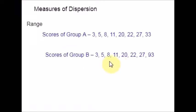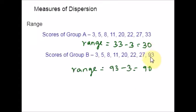I would like to show you one more example. Scores of group A and scores of group B are given. Let's find the range for both. For group A, the lowest is 3 and highest score is 33, so 33 minus 3 is 30. Same way for group B: lowest is 3, highest is 93, so 93 minus 3 is 90. Now, compare the series of scores. In group A, if a single score 33 is changed to 93, the range is widely changed. Thus, a single high score may increase the range from low to high. This is why range is not a reliable measure of variability.